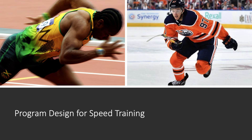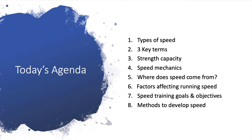Hello everyone. This week we will be discussing program design for speed training. Over the two mini-lectures this week, we will be focusing on the listed agenda items: the type of speed, three key terms related to speed development, strength capacity, speed mechanics, investigating where speed comes from, factors affecting running speed, speed training goals and objectives, and methods to develop speed.